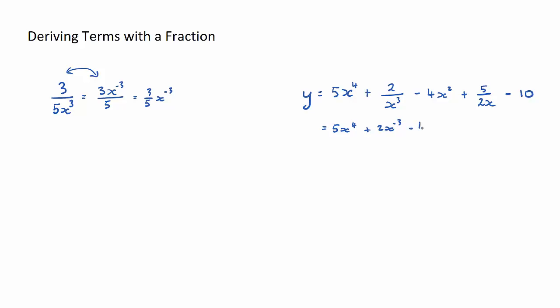The next term would be minus 4x squared. The next term would be, so note what I've done here, would be plus 5 on 2 x to the power of negative 1.